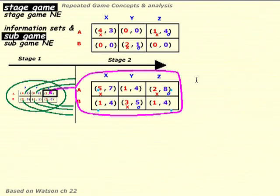So at the second stage, given what's happening in the first stage, the best responses are exactly the same as before. This particular game at the second stage — we can call a sub-game. Remember we had the idea from earlier on: a little piece of the game tree that was a game in its own right. That's a sub-game. It's got to be a game in its own right.